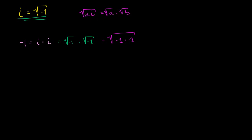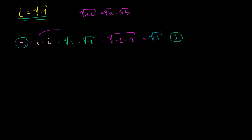If you have the principal root of the product of two things, that's the same thing as the product of each of their principal roots. And negative 1 times negative 1 is 1, so this should equal the principal square root of 1. The principal square root of 1 — this radical means the positive square root — is just positive 1. And they'll say this is wrong. Clearly negative 1 and positive 1 are not the same thing, and therefore you can't make that substitution.